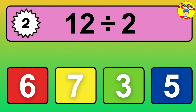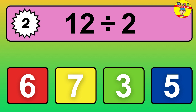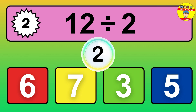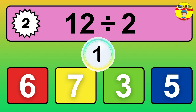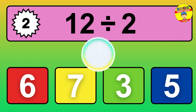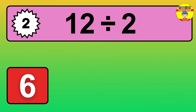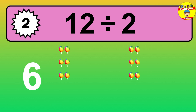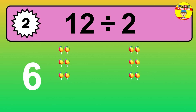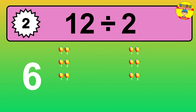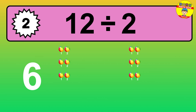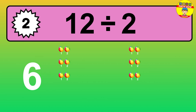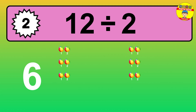12 divided by 2 — time to think! Let's go to the solution. Divide the number 12 by 2. Each group contains 2 units, so dividing 12 by 2 results in 6 equal groups. Thus, the result is 12 divided by 2 equals 6.